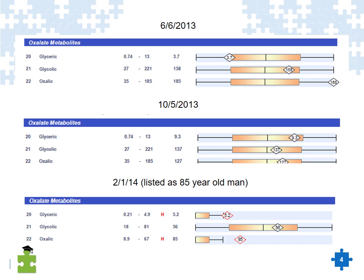What happened in this particular case is that when the test was submitted to Great Plains, whether it was misread by somebody in the lab or perhaps the parent was in a rush and wrote the wrong age down, the age on the test came back as an 85-year-old man. That, of course, changed the reference range, and it made it appear as though the oxalic was very high when, in fact, it was totally normal. It was only the reference range that changed based on the age. So just keep that in mind when you're looking at these tests with your kids.